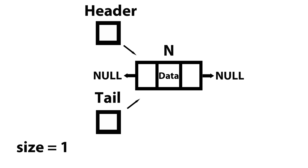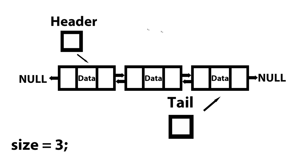Now let's move on to case two: what happens when our doubly linked list is not empty. We have our doubly linked list here with three nodes in it. The most logical place to start, if I want to add something to the end of the list, is the tail, because tail is always pointing to the last node. Since tail is pointing to the last node, I have access to it.